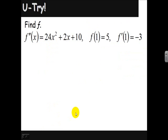You try one. We've got a second derivative just like having an acceleration function. They tell us f of 1 is 5 and f prime of 1 is negative 3. We are asked to find the original function f. Go ahead and pause the video and give this a try.